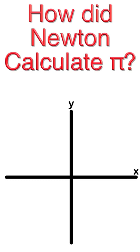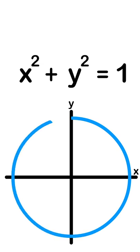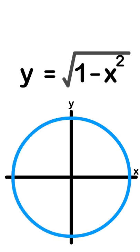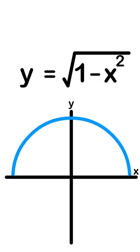How did Newton calculate pi? The equation of a circle is x squared plus y squared equals 1. If we solve for y, the equation is the square root of 1 minus x squared.